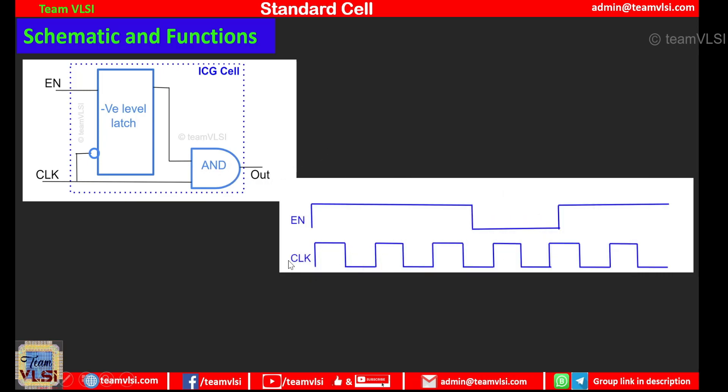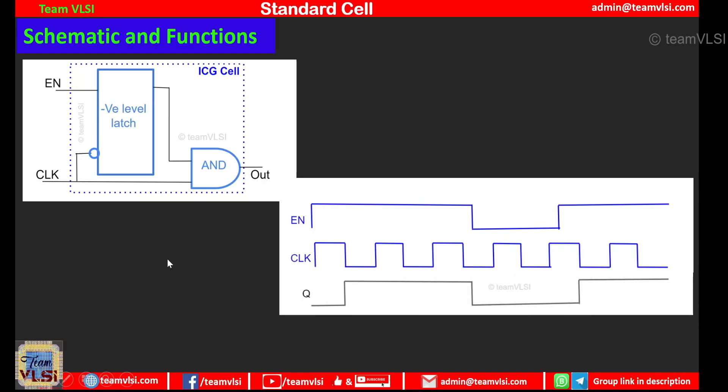And if we apply the same input to this ICG cell we will get an output from this latch like this. We know that the functionality of a negative level sensitive latch is when clock is low it is transparent and when clock is high it latches the previous output. So we will get the Q output from this latch like this.